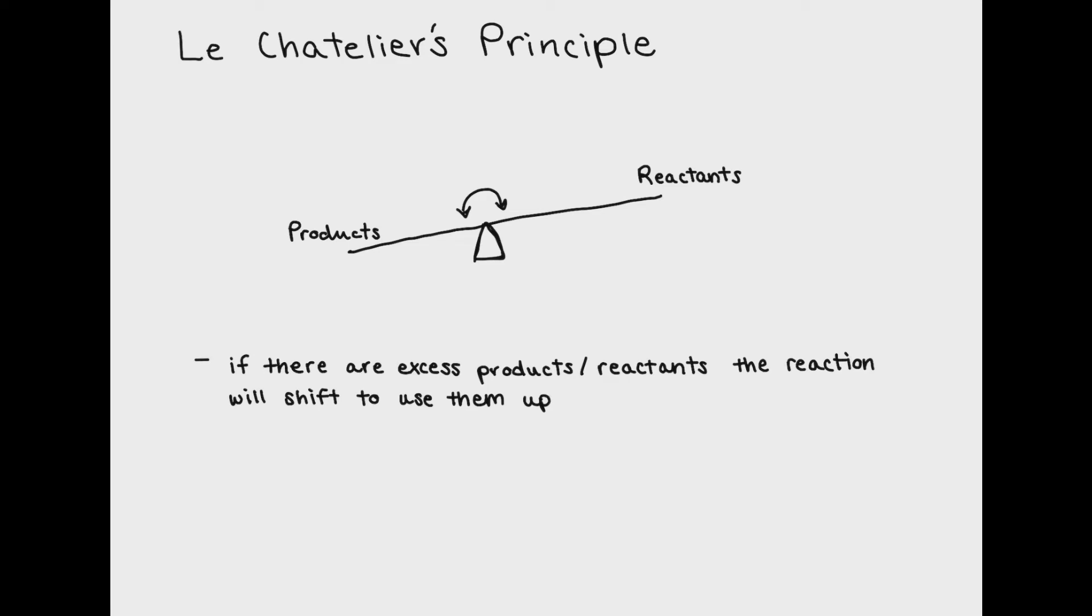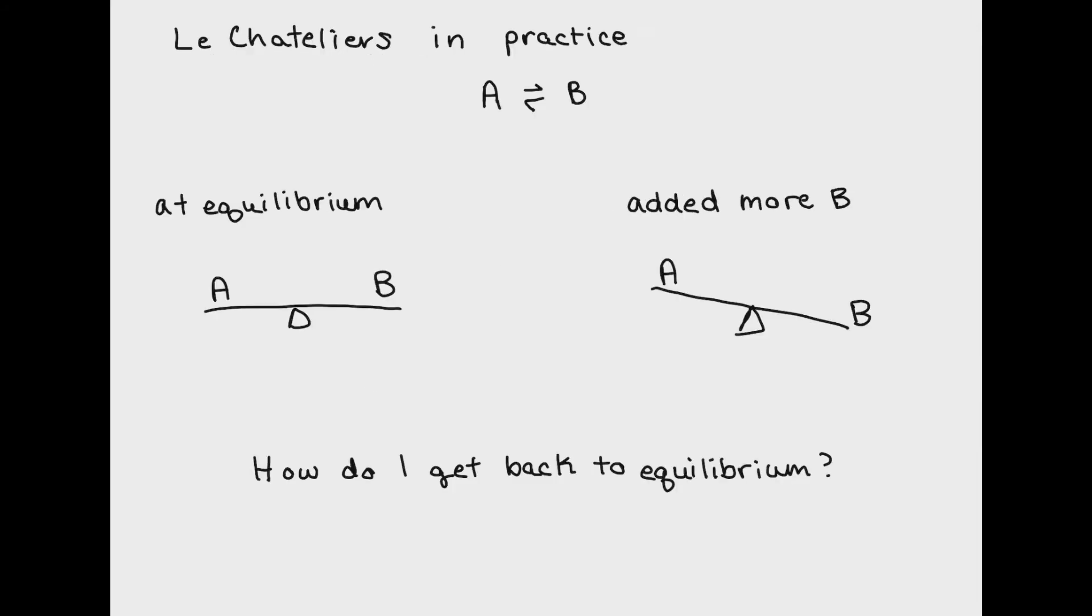So now let's talk about how this relates to equilibrium. Le Chatelier's principle is the mechanism by which reactions try to reach equilibrium. Reactions want to reach equilibrium because it's the most stable state for them to be in.